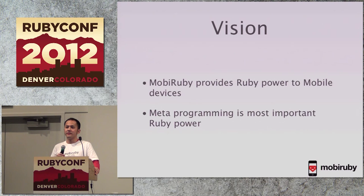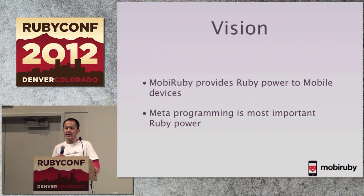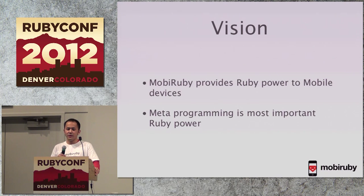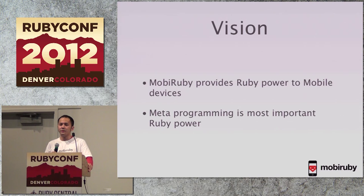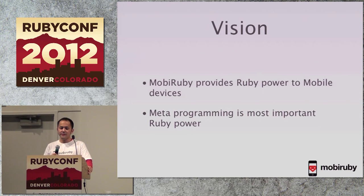mRuby brings Ruby power to mobile devices. Do you know WAX? WAX is a Lua-based iPhone application development tool chain, similar to mRuby. WAX was born about three years ago, but it is not popular yet. Why? The code is Lua language. Lua does not have enough dynamic programming capability. Metaprogramming is the most powerful capability in Ruby — Ruby's metaprogramming can make good wrapping of native libraries and create DSLs for iOS.